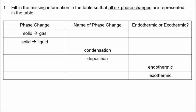These are the answers to the Properties of Matter practice test. Number one is a table in which you have to fill in all of the missing information so that all six phase changes are represented in this table.